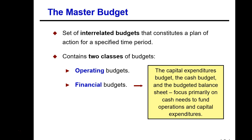Our focus with the financial budgets is on cash. We want to make sure that we have sufficient cash to meet our operational needs and capital expenditure costs. And if we do not have enough cash according to our plan, we need to identify what sources we have in order to obtain cash to meet our objectives.